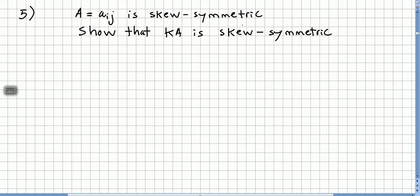Just a quick reminder that a skew-symmetric matrix is a matrix where A transpose equals minus A. So we have A where A is a skew-symmetric matrix, and we have to show that kA is skew-symmetric. We're going to get this k from the field of scalars, of course.